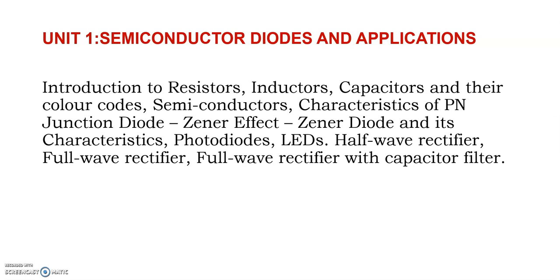From semiconductors, we will go into some applications like the P-N junction diode. The diode is a two-terminal device: P and N are the two terminals — anode and cathode. We will be studying its characteristics. We also have another application-specific diode called the Zener diode, which is used for voltage regulation — to keep a voltage constant. We will look at its characteristics as well.